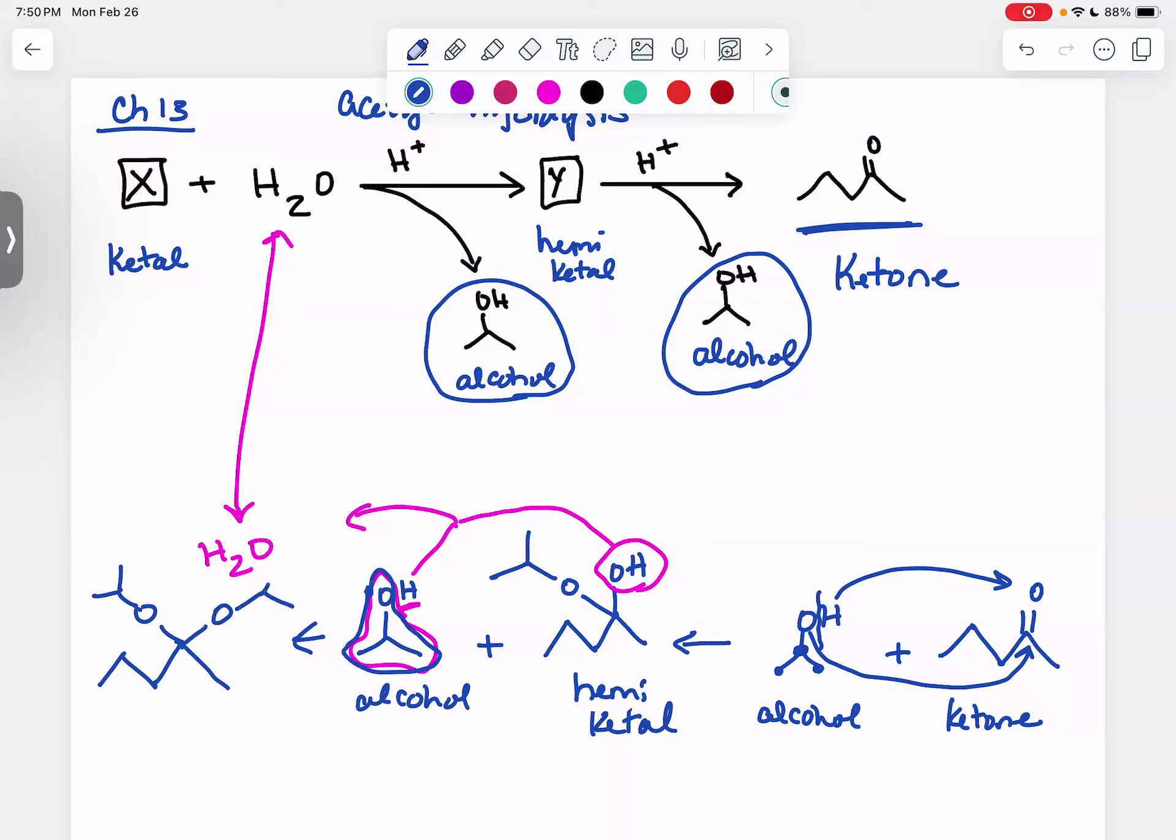So when you add it in, this is now X. This is what you would draw for X right here. This is X, and then this would be Y. All it's doing is going in reverse.